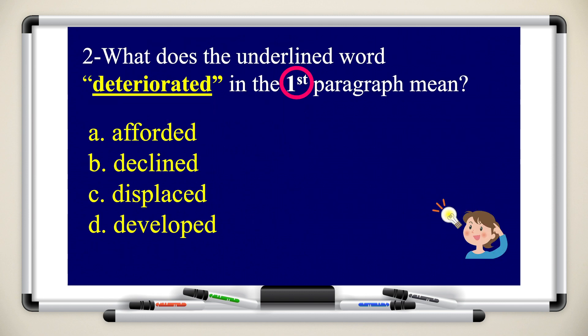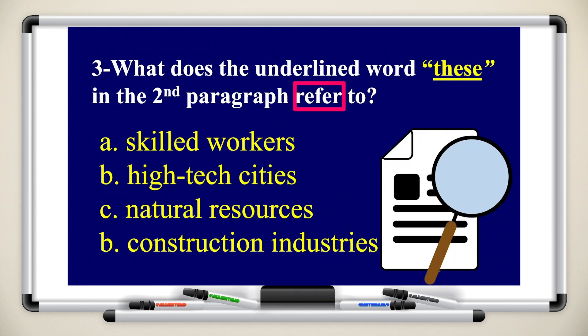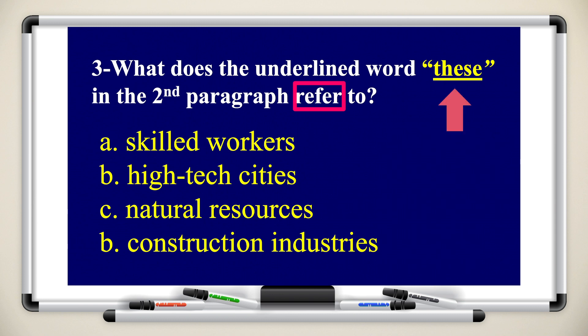What does the underlined word 'deteriorated' in the first paragraph mean? Now in the last episode, we took this word — do you remember? The answer is: declined. Question number three: what does the underlined word 'these' in the second paragraph refer to? Go back to the textbook to the second paragraph and check. 'These' refers to skilled workers.